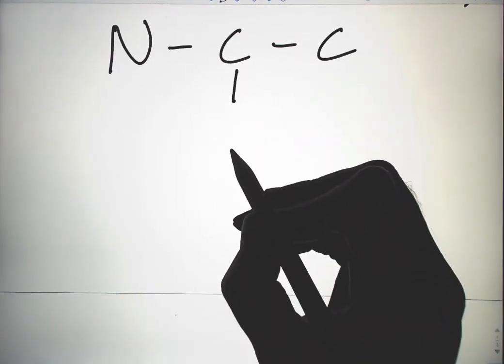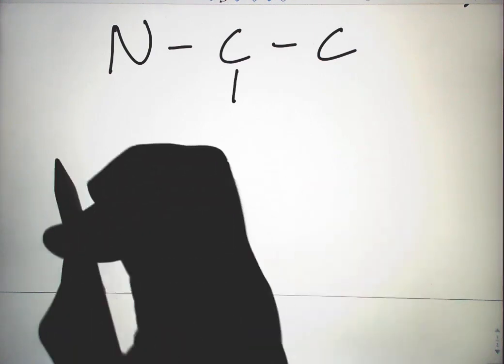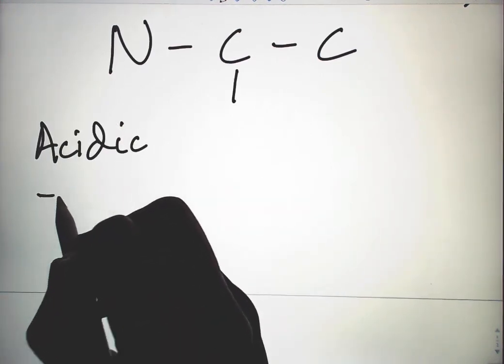Back to our N-C-C with the R group in the middle. Amino acids that are acidic have a carboxyl group.